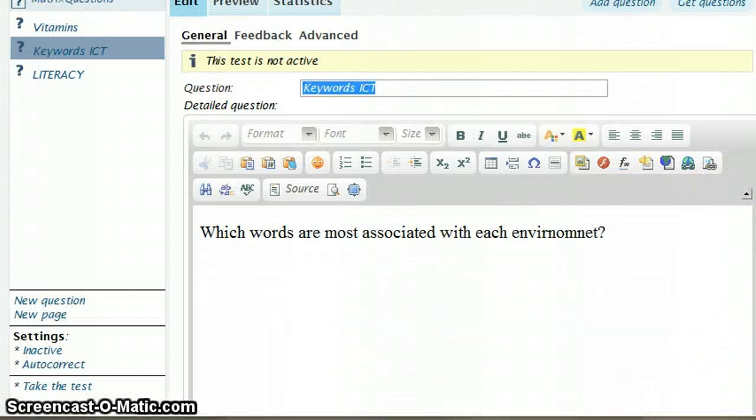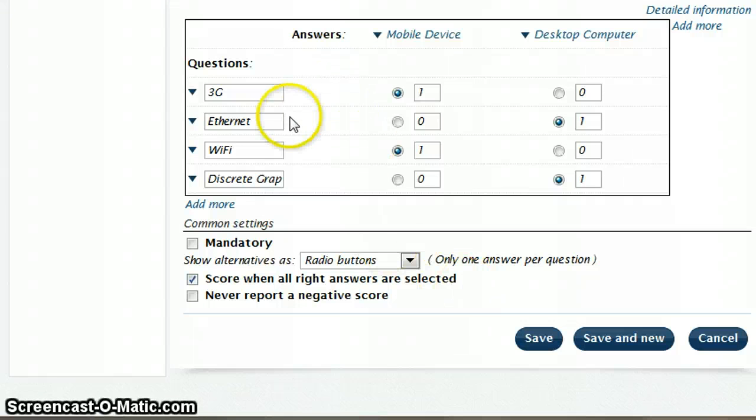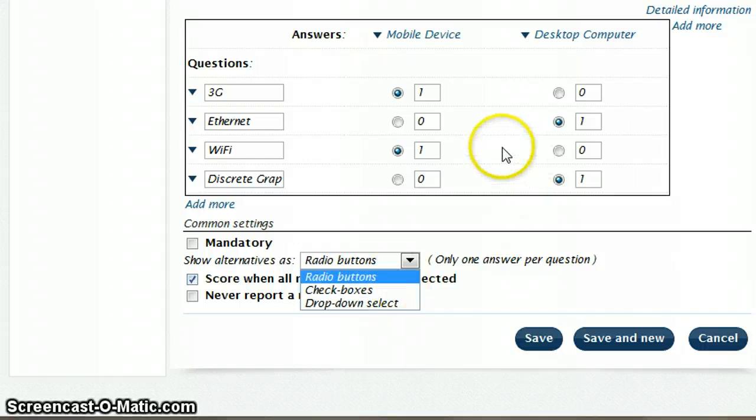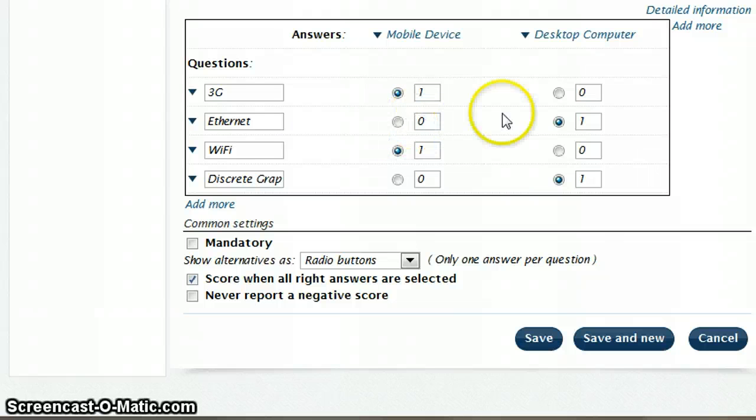So that's it. The only other thing is that if there were things associated with more than one device, you could choose checkboxes from here, which means that pupils will be able to select multiple options at the same time instead of just one per row.